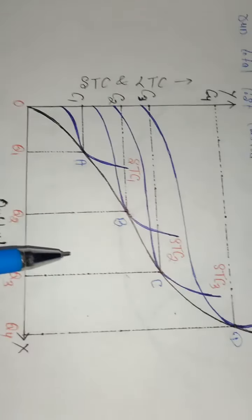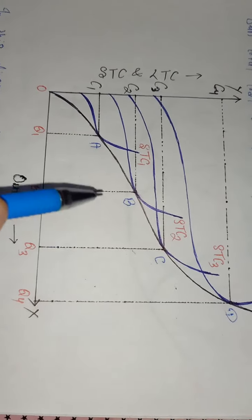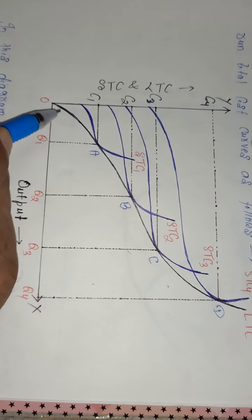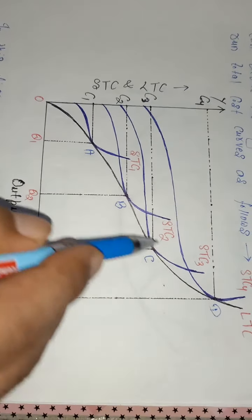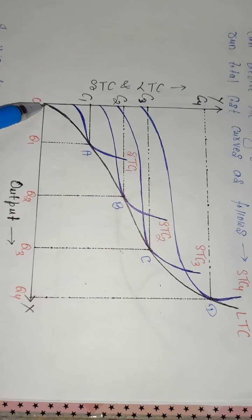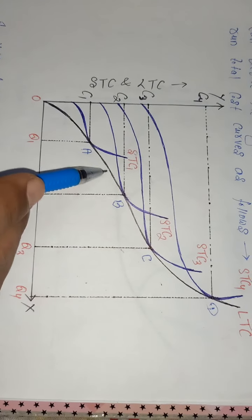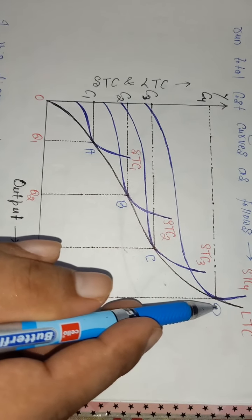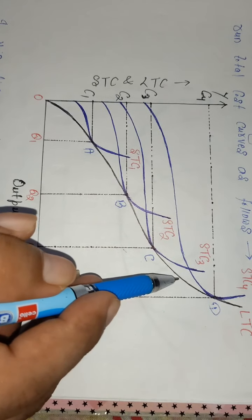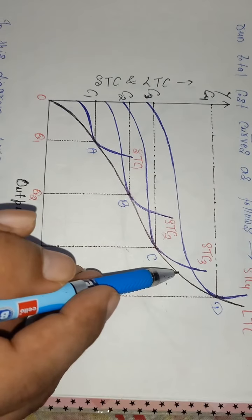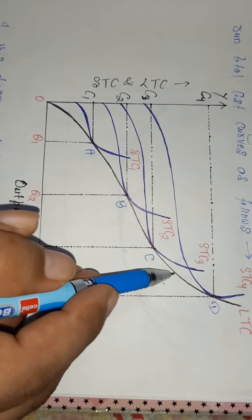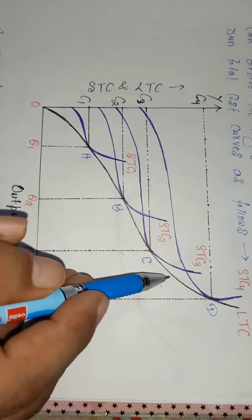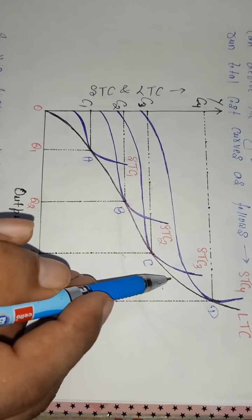The nature of the LTC curve is the same as the short run total cost curves — it is an inverse S-shape, first increasing at an increasing rate, then increasing at a decreasing rate. It follows the law of the long run production function, and the curve behaves accordingly.